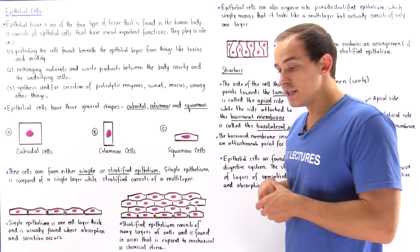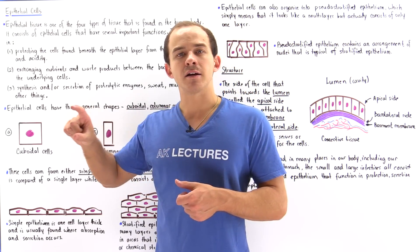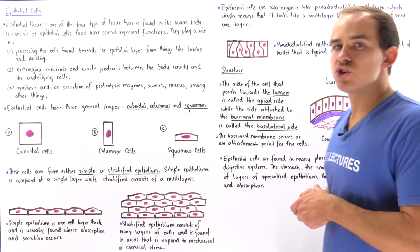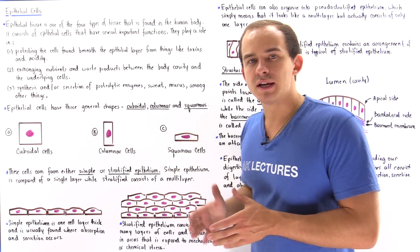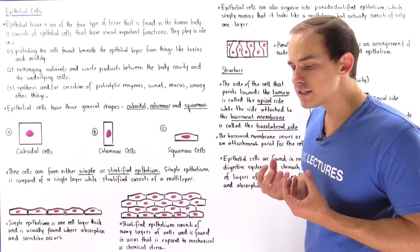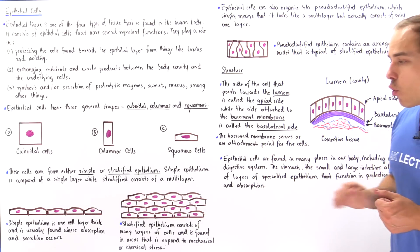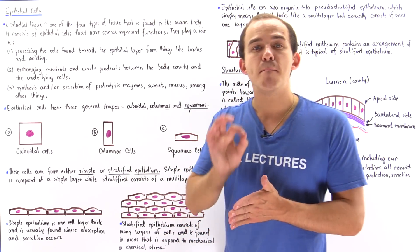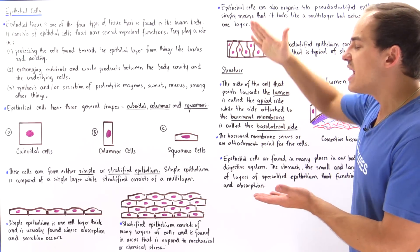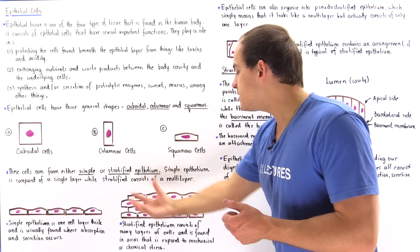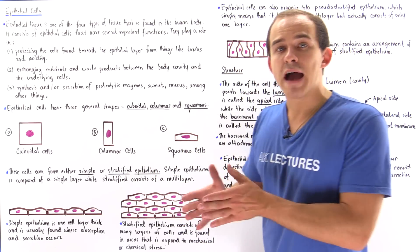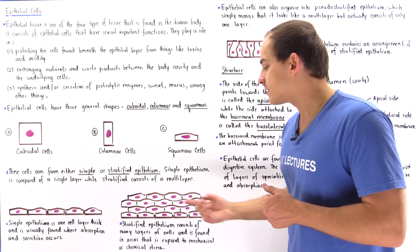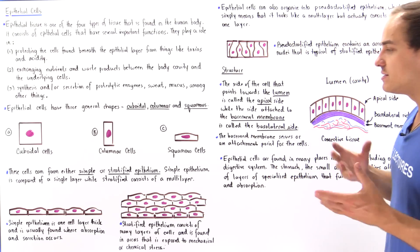Simple epithelium means that we have a single layer of cells across the entire basement membrane, and we'll see what the basement membrane is in just a moment. Simple epithelium is usually found in that region of our digestive system that requires secretion and/or absorption. On the other hand, stratified epithelium simply means we have many layers of epithelial cells stacked on top of one another, and this type is usually found in regions exposed to a continual amount of mechanical and chemical stress.